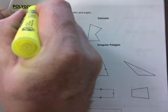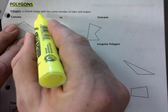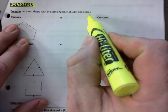So polygons, the definition is that it's just a closed shape with the same number of sides and angles.